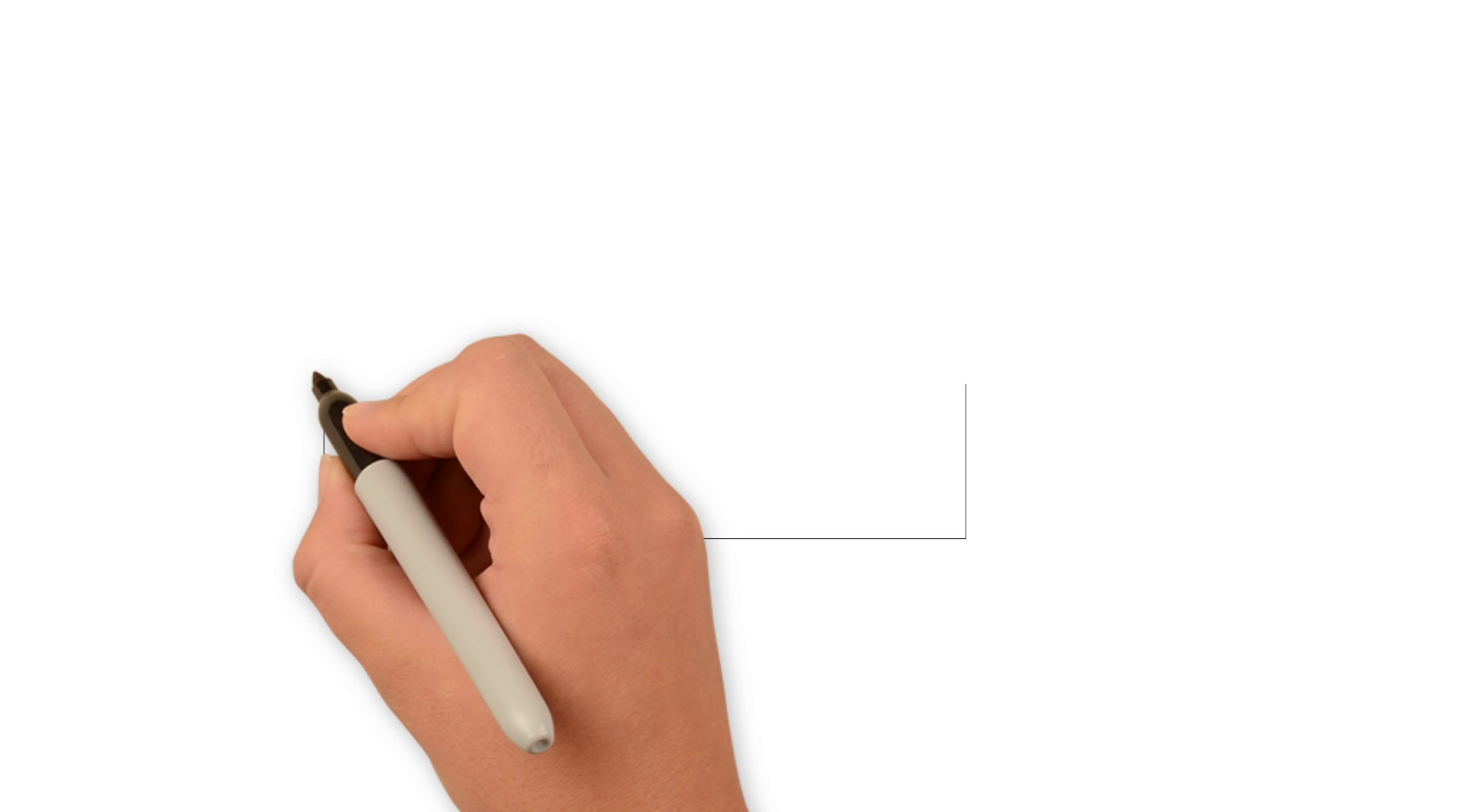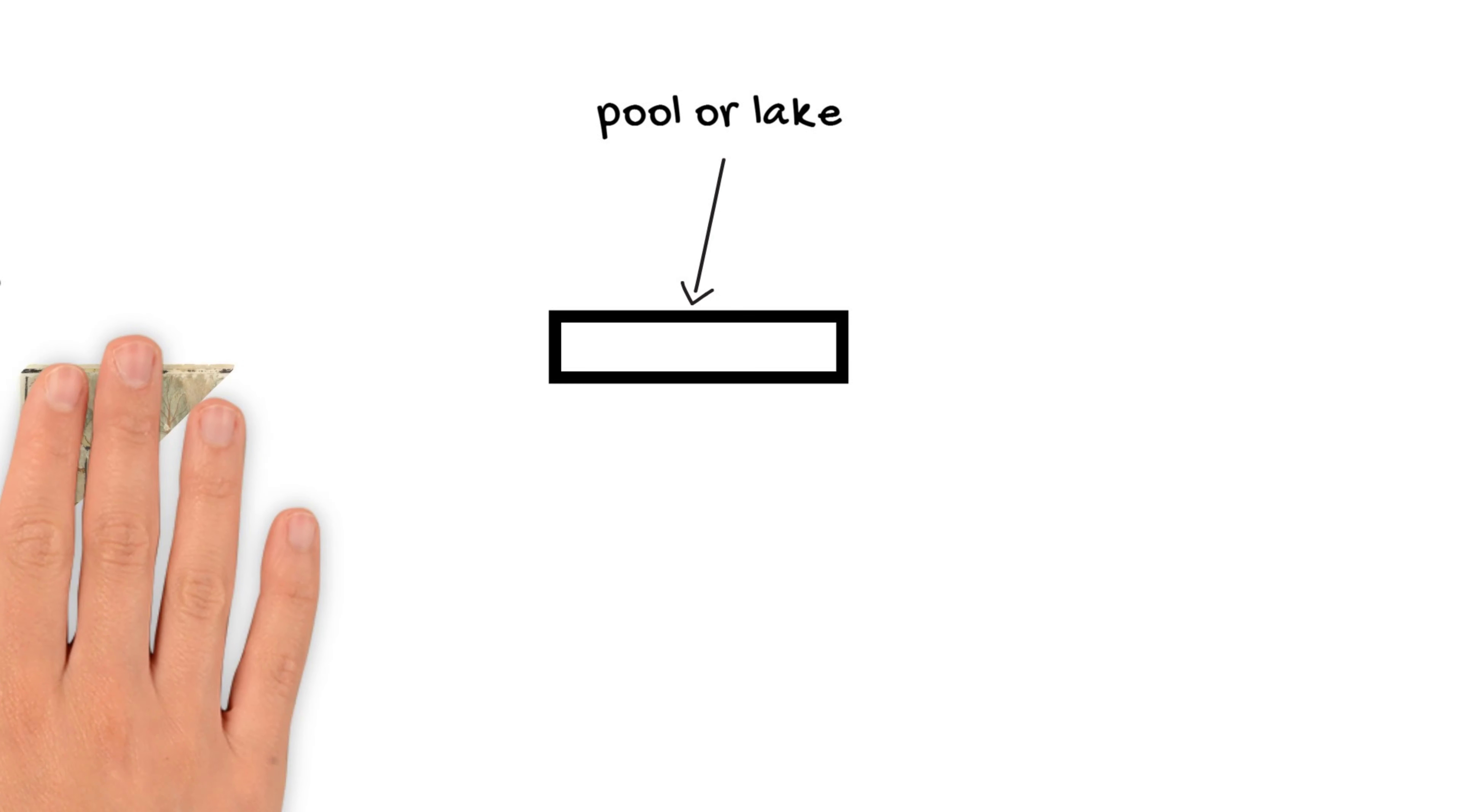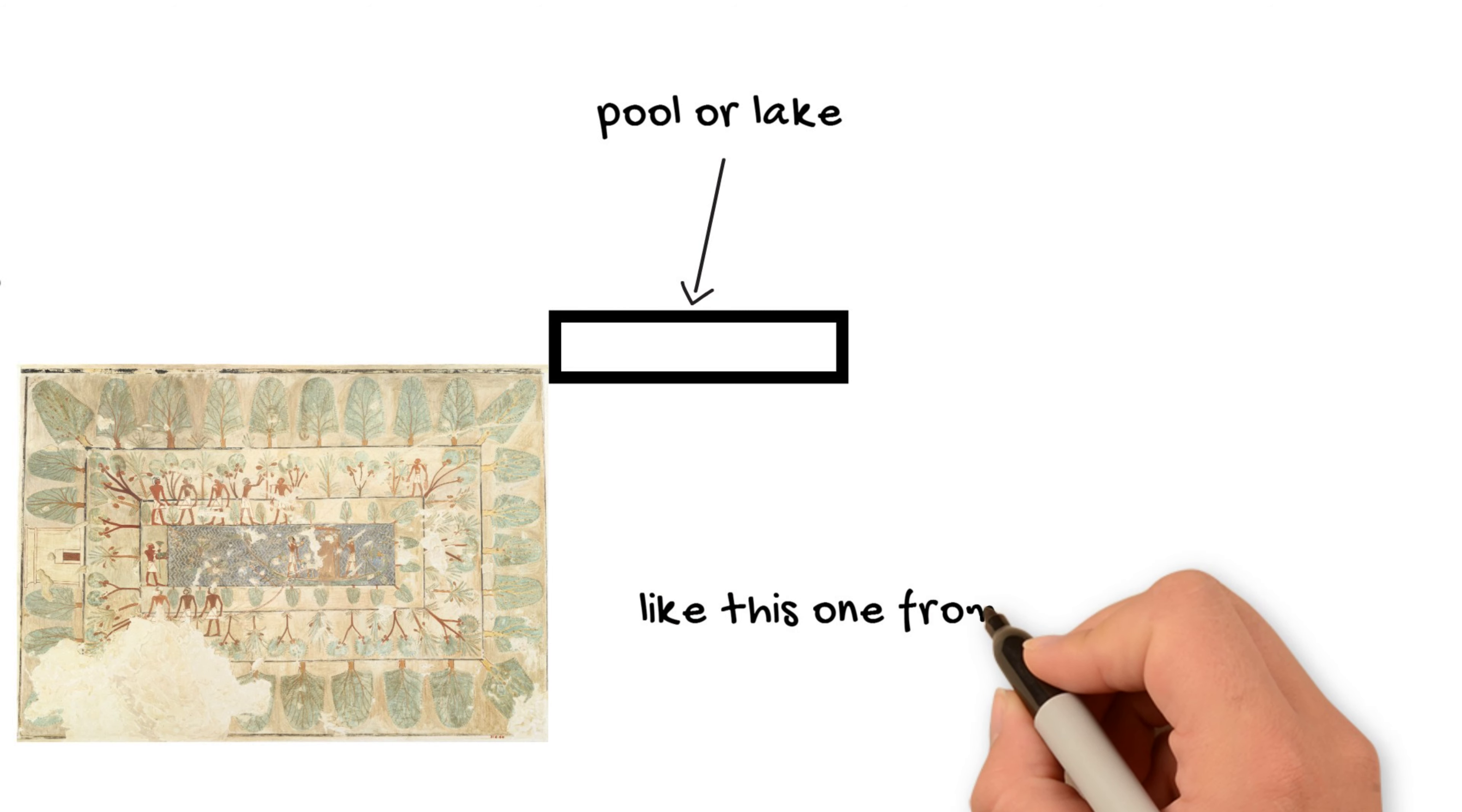All right, so it's a very simple schematic hieroglyph here of a rectangle. Hard to tell what it might be just from that, but it is a depiction of a pool or a lake. And you can tell this because in more elaborately painted tombs and stela and so forth, they actually do write in sort of the water-wavy lines with blue and green. So we know it does depict an enclosure of water.